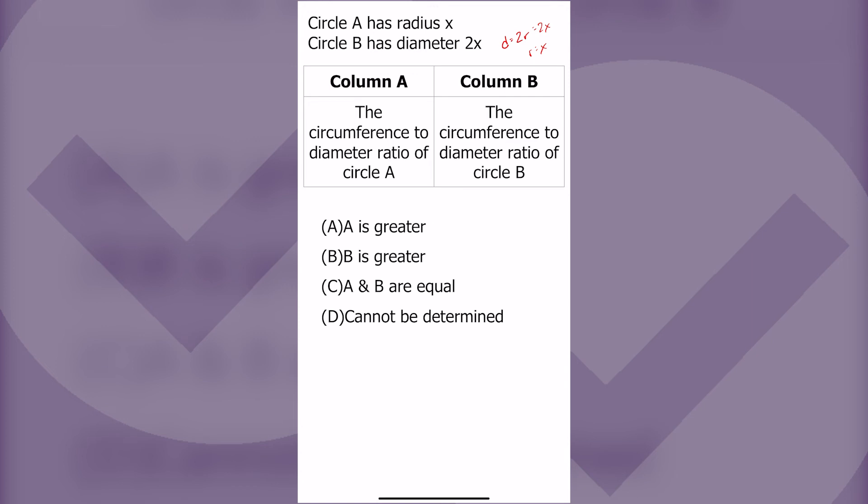So column A and column B are asking for the same ratio in the same circle, and therefore they're equal.